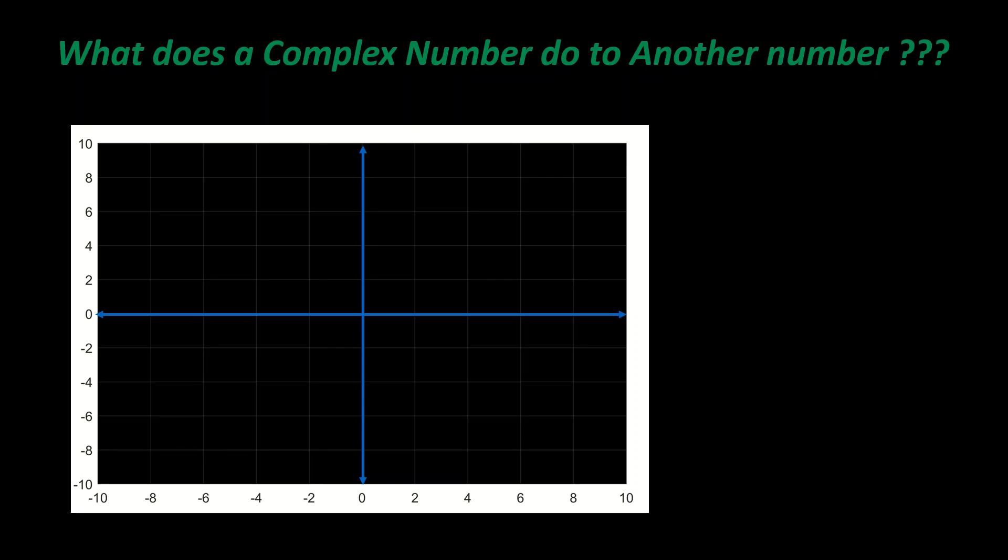What does a complex number do to another number? This is very important because the basic formula of Ohm's law is represented as V equals I into Z.